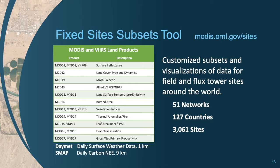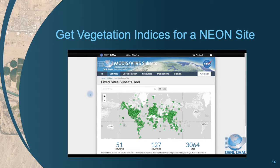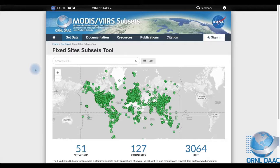Some of you probably do research at a flux tower site or at a long-established field site. The Fixed Sites Subsets tool will make getting satellite remote sensing data for your site a lot easier. This tool provides pre-made subsets of key MODIS and VIIRS land products for over 3,000 ecological research sites around the world and from over 50 networks, including AmeriFlux and NEON. In this demo, you will see an example of how to visualize and download remote sensing data for a NEON site using the Fixed Site Subsets tool.